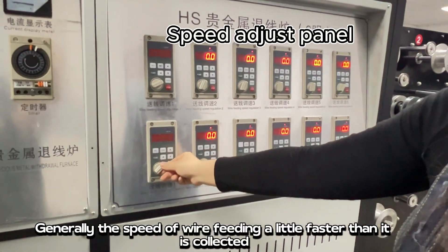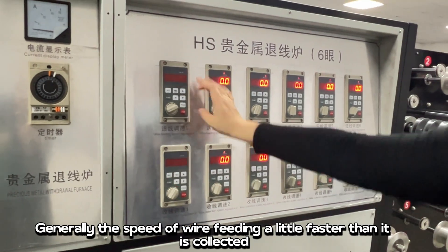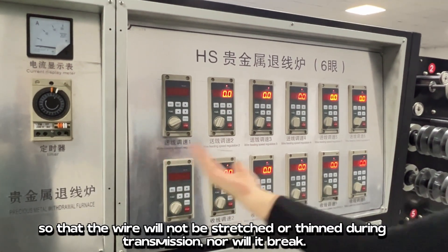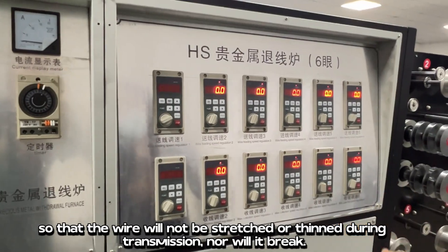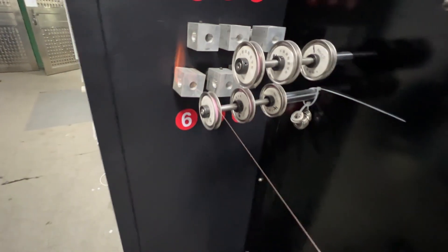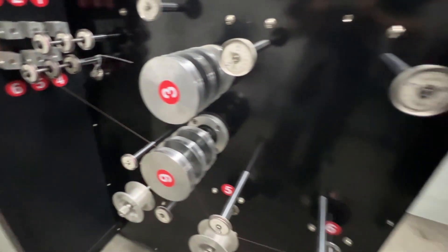Generally, the speed of wire feeding should be a little faster than wire collection. So that the wire will not be stretched or thin during transmission, nor will it break.